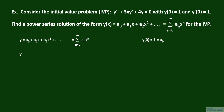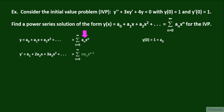We obtain y prime by differentiating each term of y. The derivative of a sub 0 is 0, the derivative of a sub 1 times x is a sub 1, and the derivative of a sub 2 times x squared is 2 a sub 2 times x, and so on. In summation form, y prime equals the sum from n equals 0 to infinity of n times a sub n times x to the n minus 1 power.